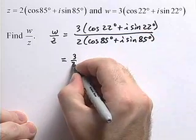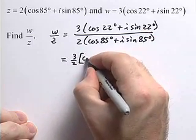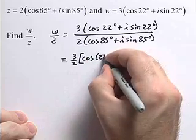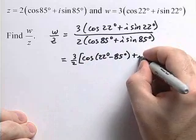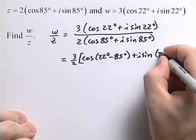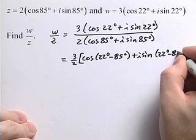This will give us 3 halves times the bracket cosine of 22 degrees minus 85 degrees plus i times the sine of 22 degrees minus 85 degrees.